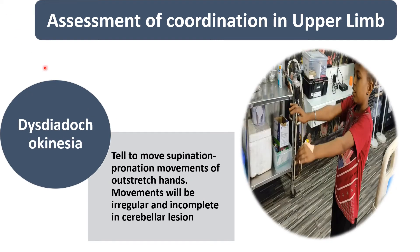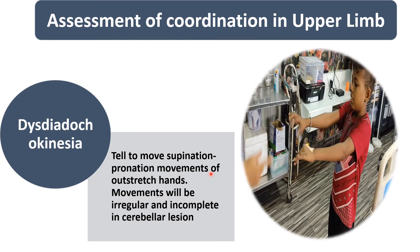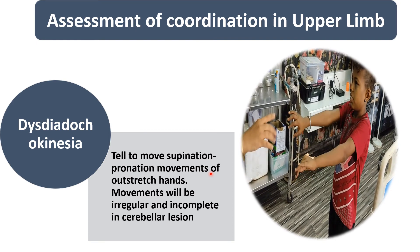Another upper limb coordination test is dysdiadochokinesia. We ask the child to alternately move the outstretched hands in supination and pronation, or alternatively pat the palm of one hand over the palm of the other. In this video, you can see the child performing this movement. If the child performs this normally, coordination in the upper limb is intact. If the movements are irregular or incomplete, this is characteristically seen in cerebellar lesion.